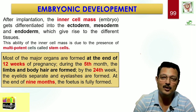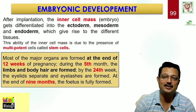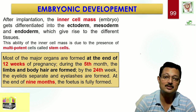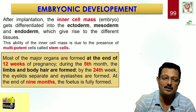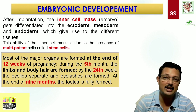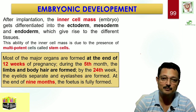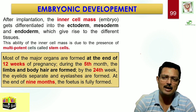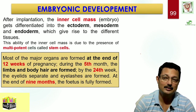After implantation, the inner cell mass differentiates into ectoderm, mesoderm, and endoderm as a result of gastrulation. Some inner cell mass remains as stem cells — even within the umbilical cord, some stem cells are preserved, and techniques exist today to preserve them, as they are capable of making all different types of tissues in the body. Most of the organs are formed by the end of 12 weeks. In MTP, it is safe to conduct the procedure up till 3 months (first trimester) because by the end of the first trimester, all the organs are being formed.